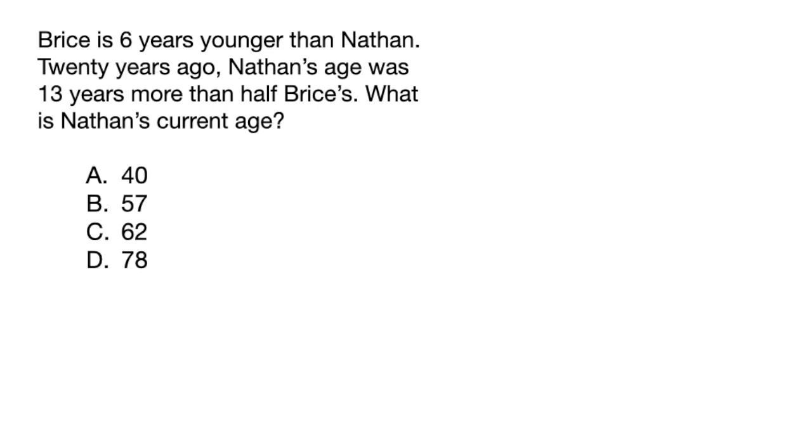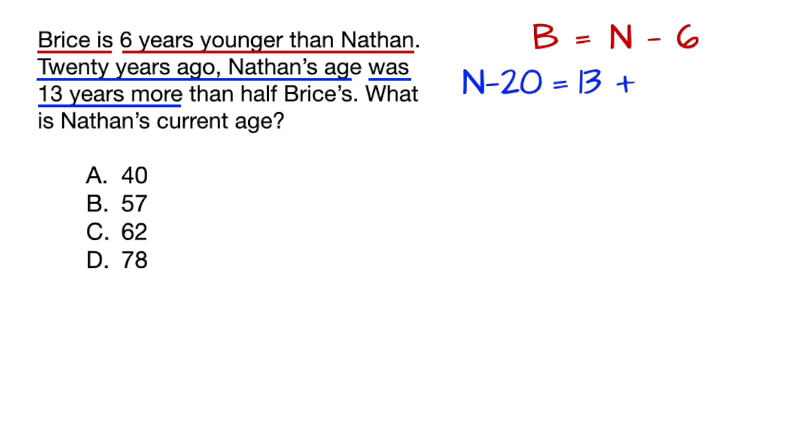Let's try another example where we write what we read sentence by sentence or even sentence fragment by sentence fragment. Bryce is means B equals six years younger than Nathan, which means negative six plus N or N minus six. Twenty years ago, Nathan's age, negative 20 plus N or N minus 20, was means equals 13 years more, which means 13 plus, then half Bryce's age, which means half times B minus 20.